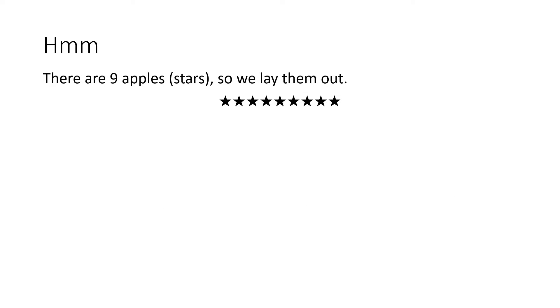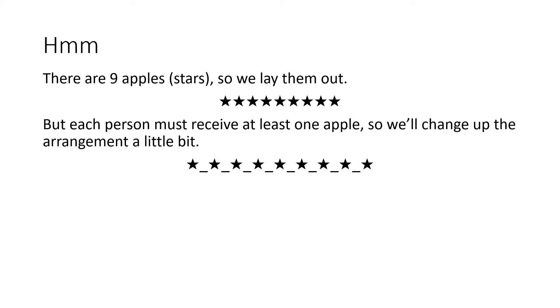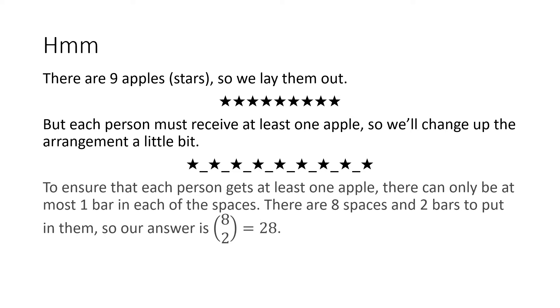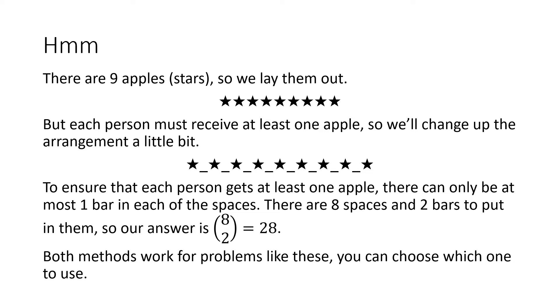Let's do another method for this problem. There are 9 apples or stars, so we lay them out. But each person must receive at least one apple, so we'll add a space between each star. There can only be one bar in each space, so each person gets at least one apple. So there are 8 spaces and 2 bars, so our answer is 8 choose 2, or 28 again. Both of these methods work — you can choose which one to use for this problem.